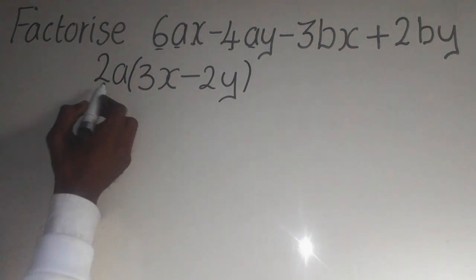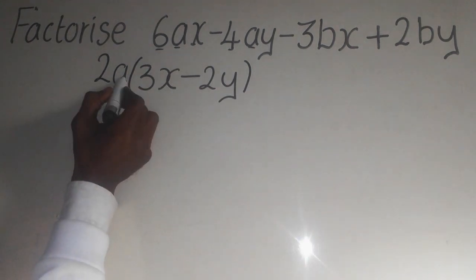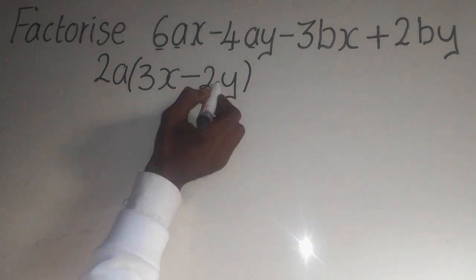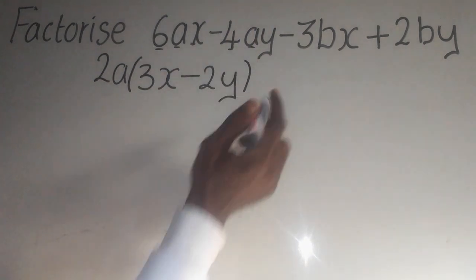How true is it? For example, 2A times 3X, it is this one. 2A times this one will give me this one here, which is correct.